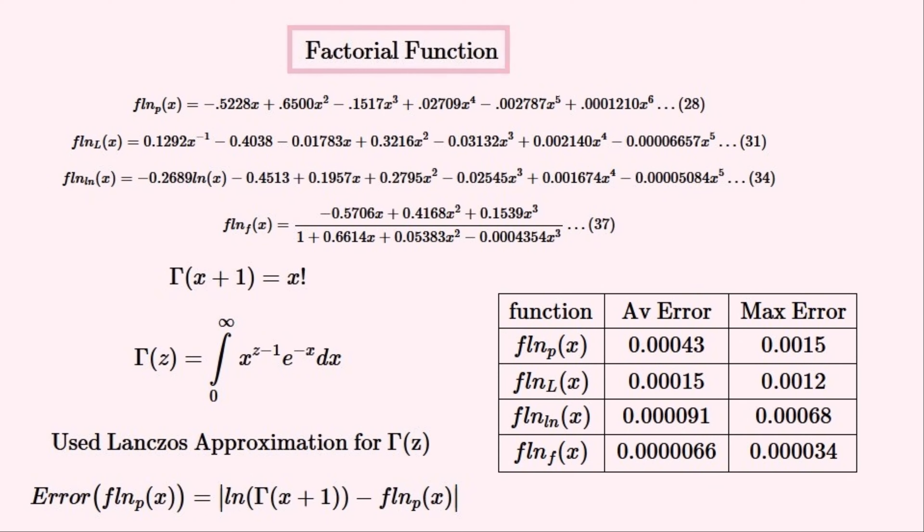Just looking at this table, we can see that the standard polynomial function is the worst, giving the biggest errors. The Laurent polynomial comes next, and then the log polynomial — but these two types of function can't calculate the factorial of 0. The polynomial fraction is the best in terms of error. It is harder to exactly differentiate and integrate, which is its downside, but for these purposes it has no disadvantages. I hope that you have enjoyed this video and have learnt something useful and helpful from it. Please click like and subscribe if you have, and write all of your thoughts and opinions in the comments. Thank you for watching.